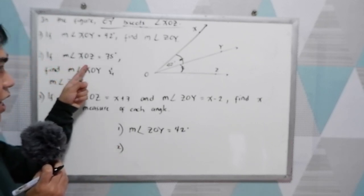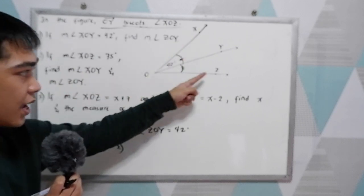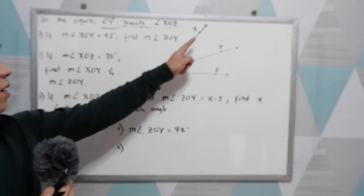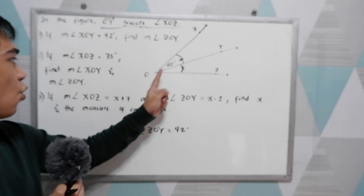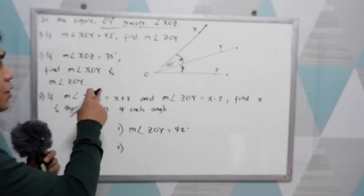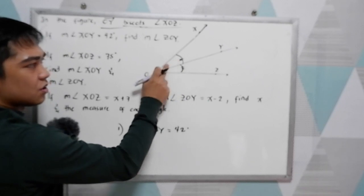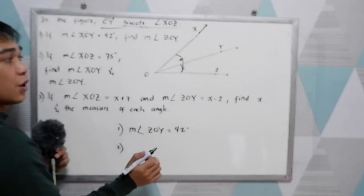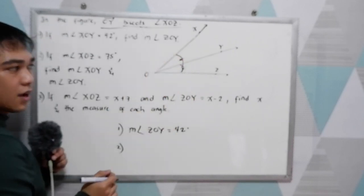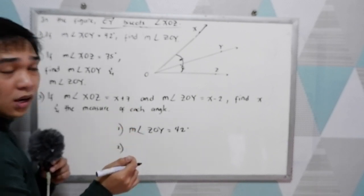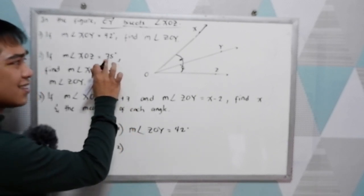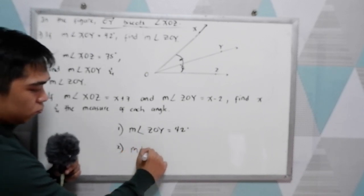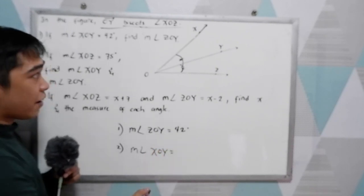For number two, if measure angle XOZ is 75 degrees, find measure angle XOY and angle ZOY. So the measure of angle XOZ is 75 degrees, and we're going to find the two angles. Of course, the two angles are equal.